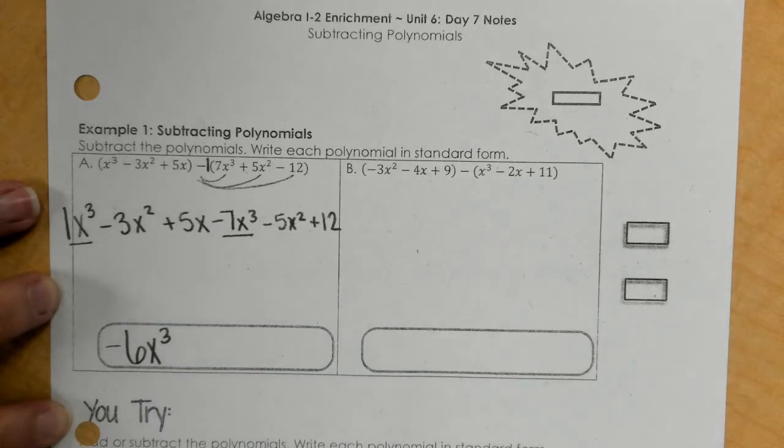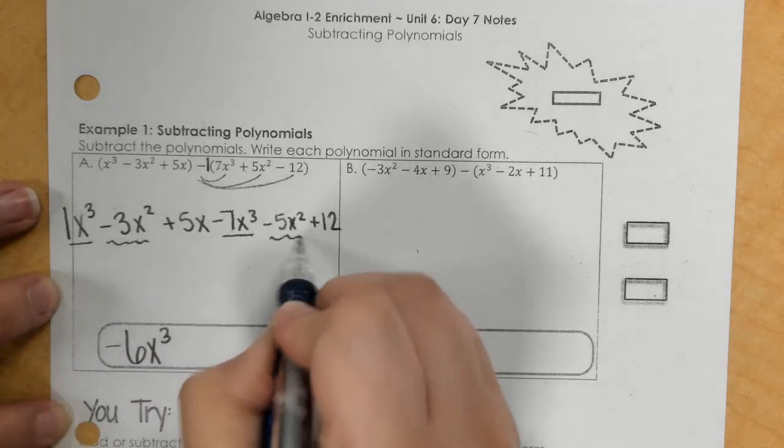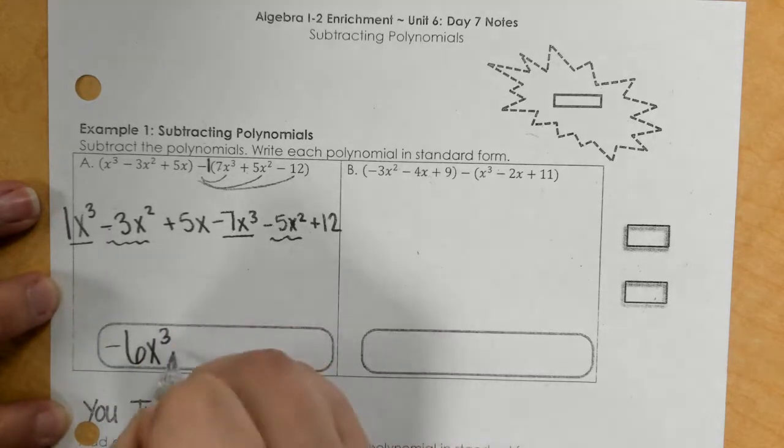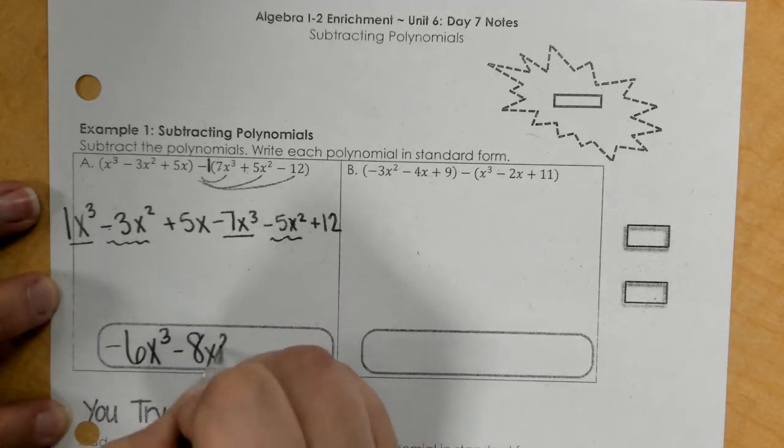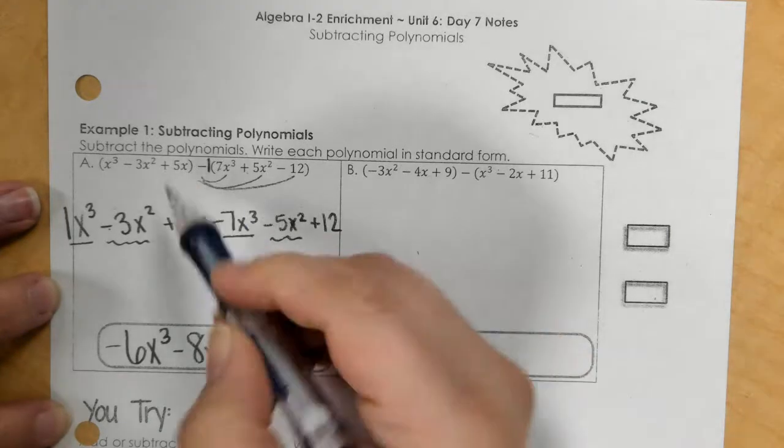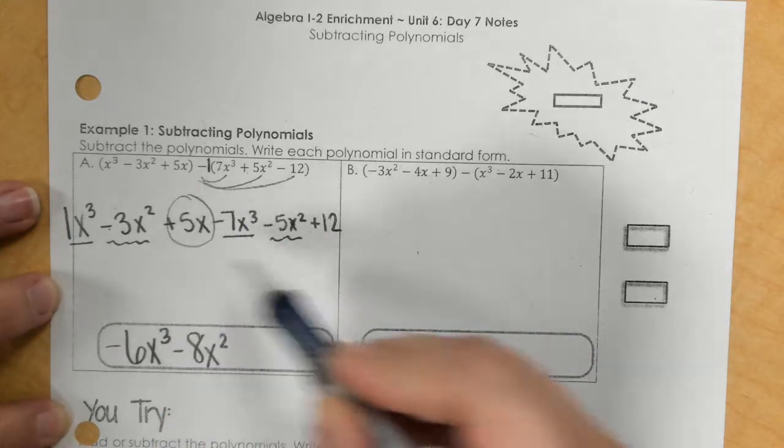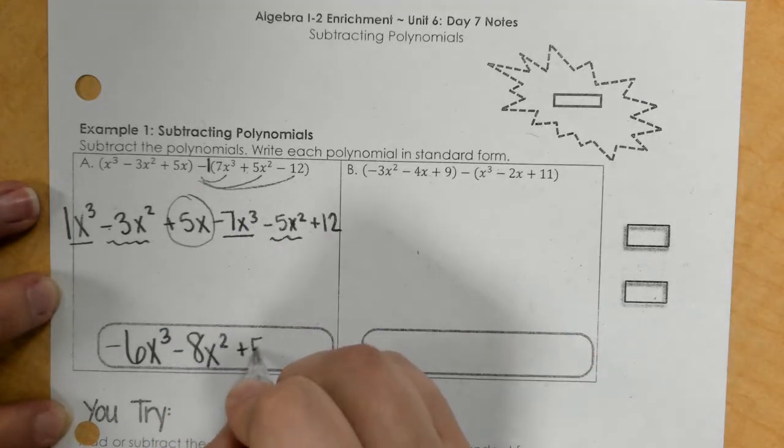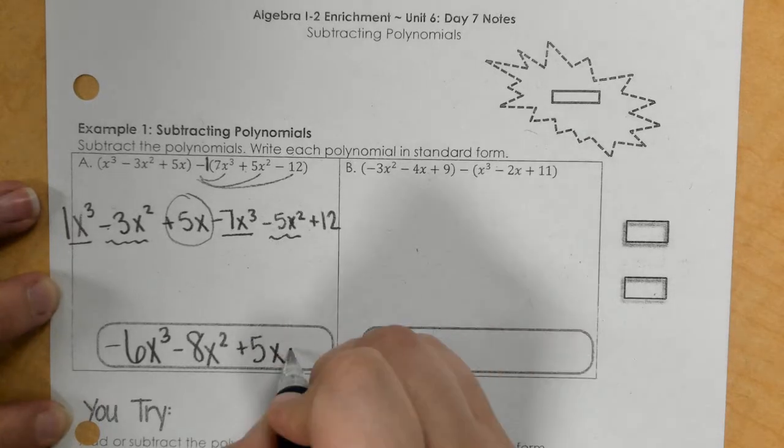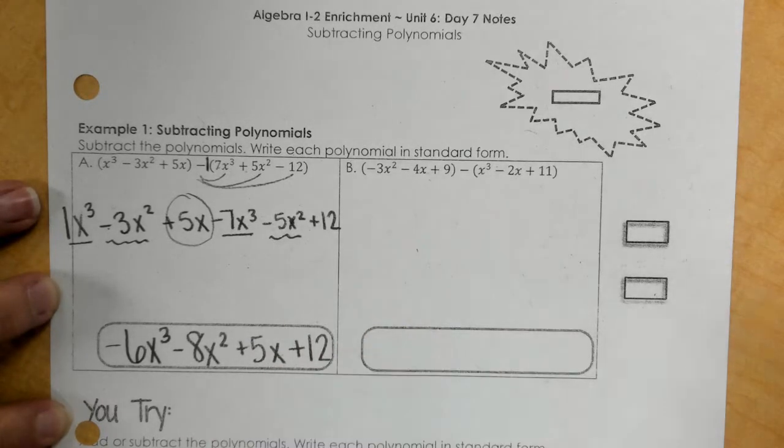And then we have x squared. So negative 3 minus 5 is a negative 8x squared. And then 5x has nothing to combine with, so I just bring it down. And then I have plus 12 because it has nothing to combine with either.